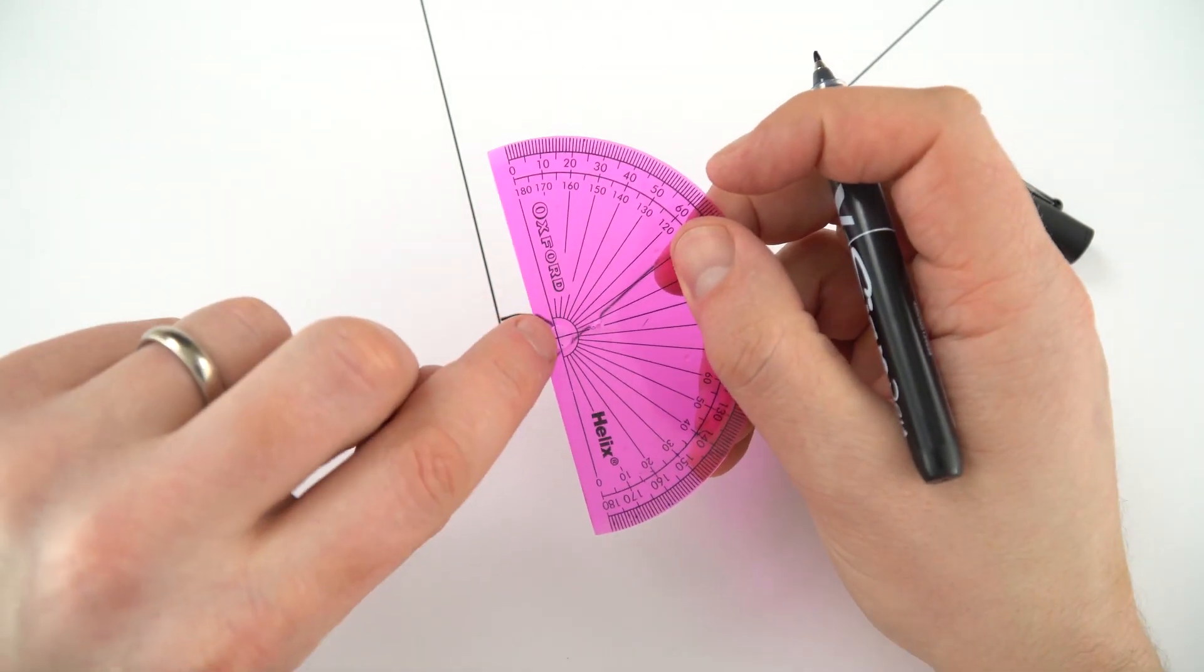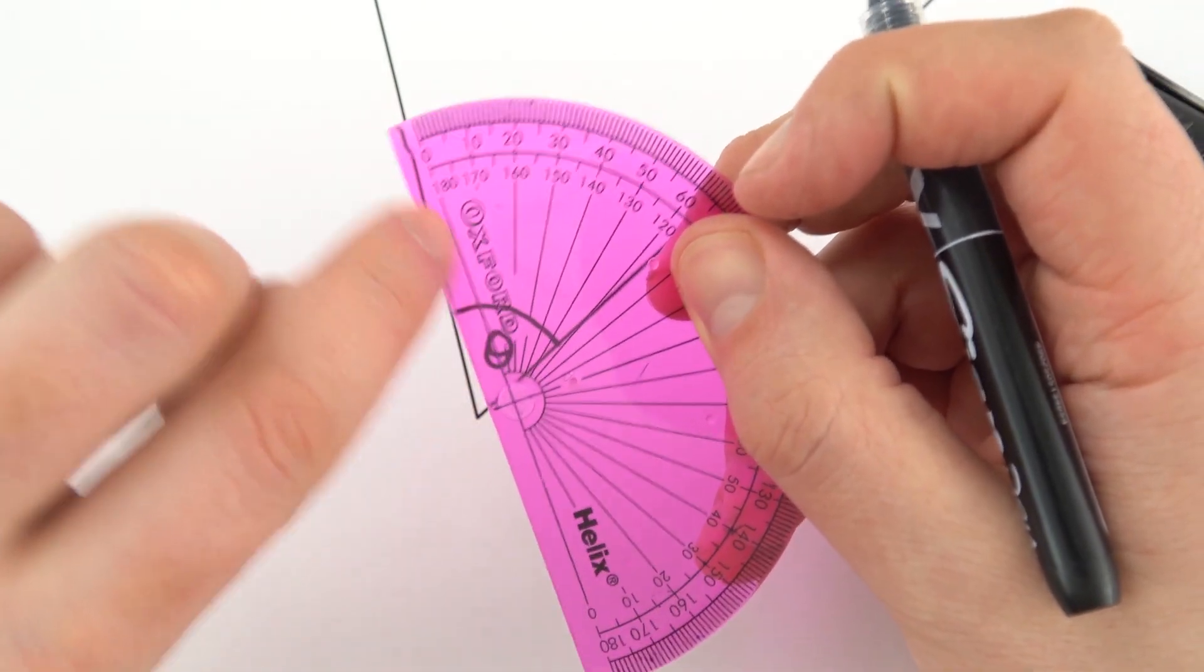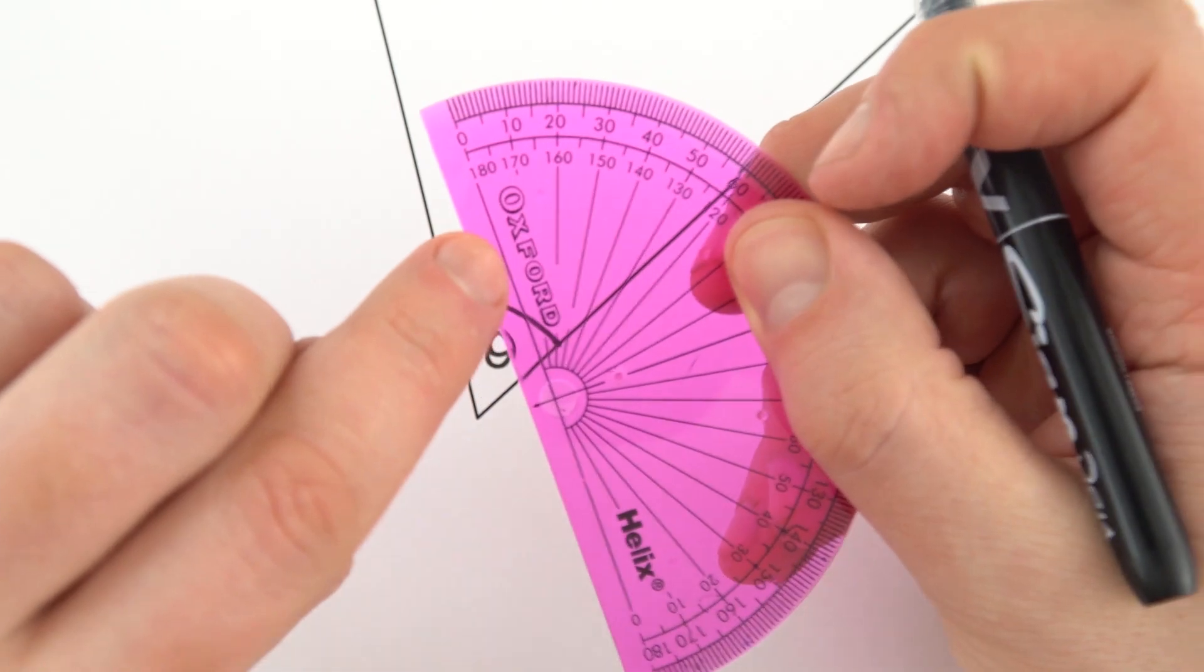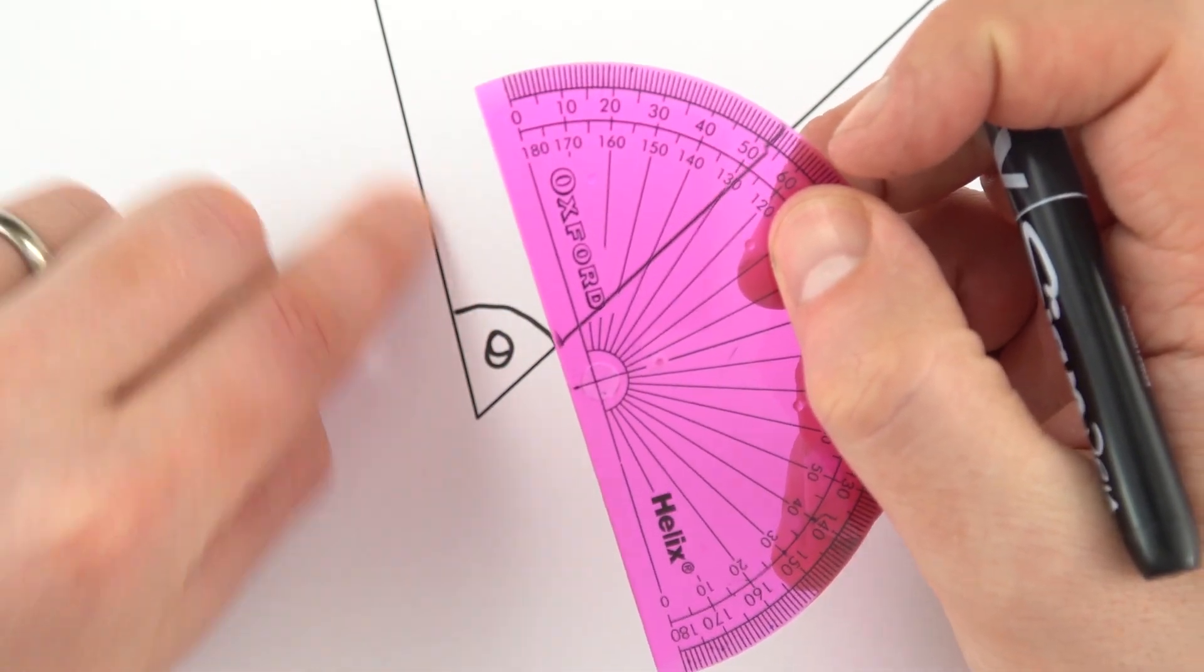Now the way we're going to do it is we're just going to line up this black line on the inside of the protractor, not the very edge but this inside black line. We're going to line it up with this side here.